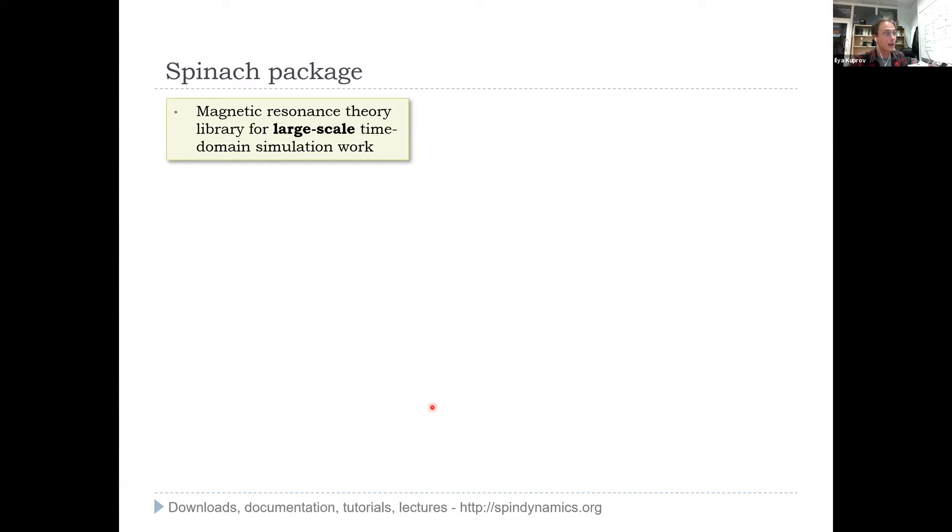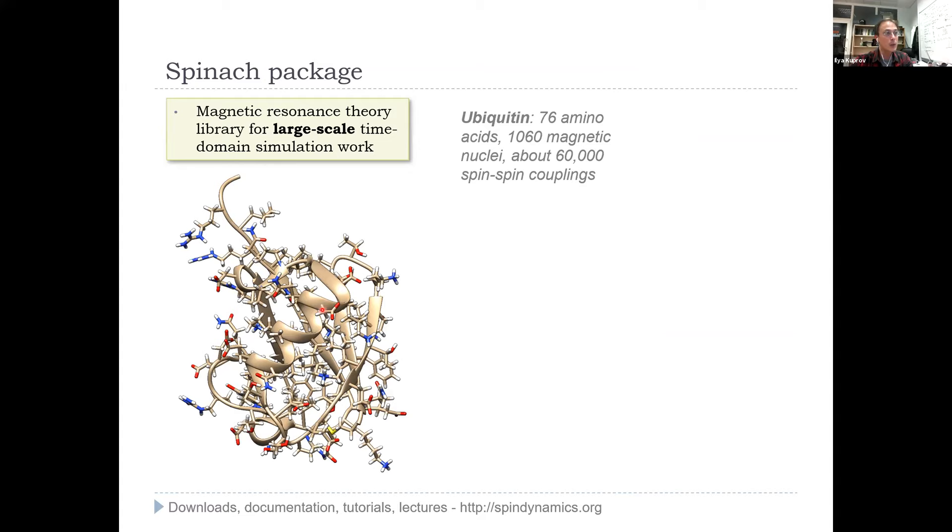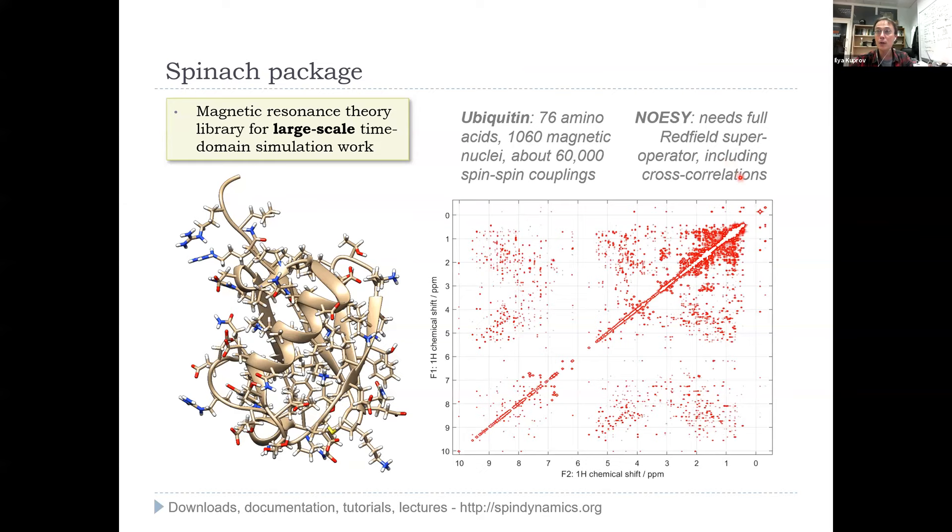How was this all eventually possible? How can we package all this pretty scary theory into something that ultimately becomes simple? The answer is Spinach. It's a package that we have for large scale time domain simulation work, including relaxation theory. Take ubiquitin, 76 amino acids, over a thousand magnetic nuclei, 60,000 couplings in the anisotropic Hamiltonian, and say we would like quantitatively correct NOESY simulations for it. So full Redfield super operator including all the cross correlations for a thousand spin system. Here's the NOESY. That's computed, that is theoretical. This is quantitatively correct. This is full time domain quantum mechanical simulation with Redfield relaxation super operator, all the zero quantum artifacts, everything you will have in there.